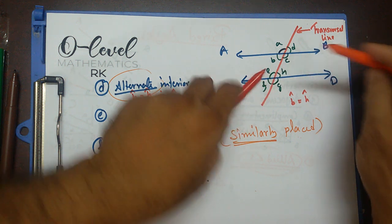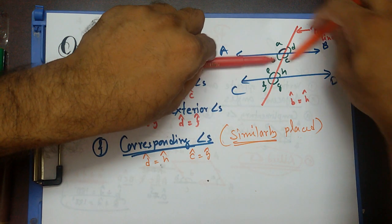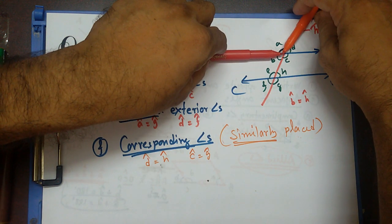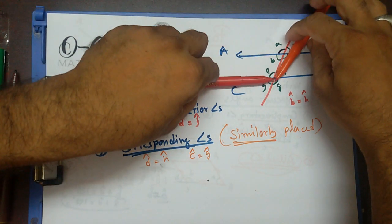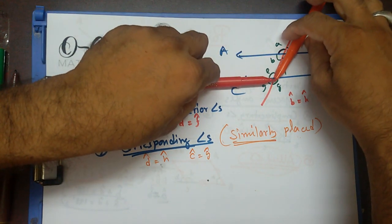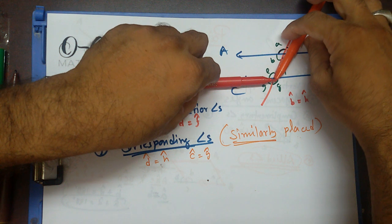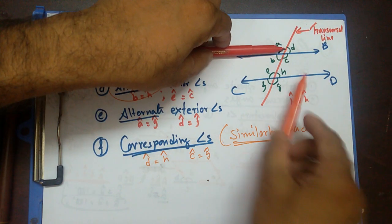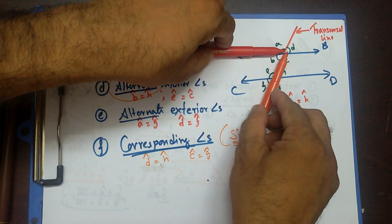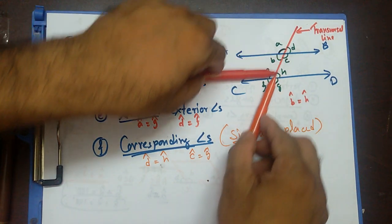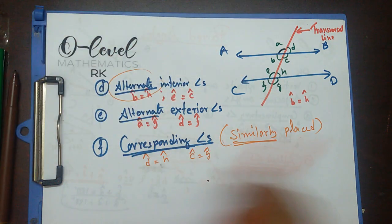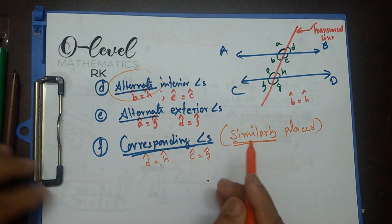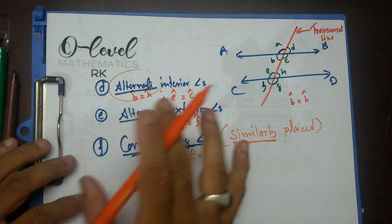Similarly, angle C equals angle G — C slides down to become G. And angle A equals angle E, and angle B equals angle F. They are all similarly placed, so they are corresponding angles.